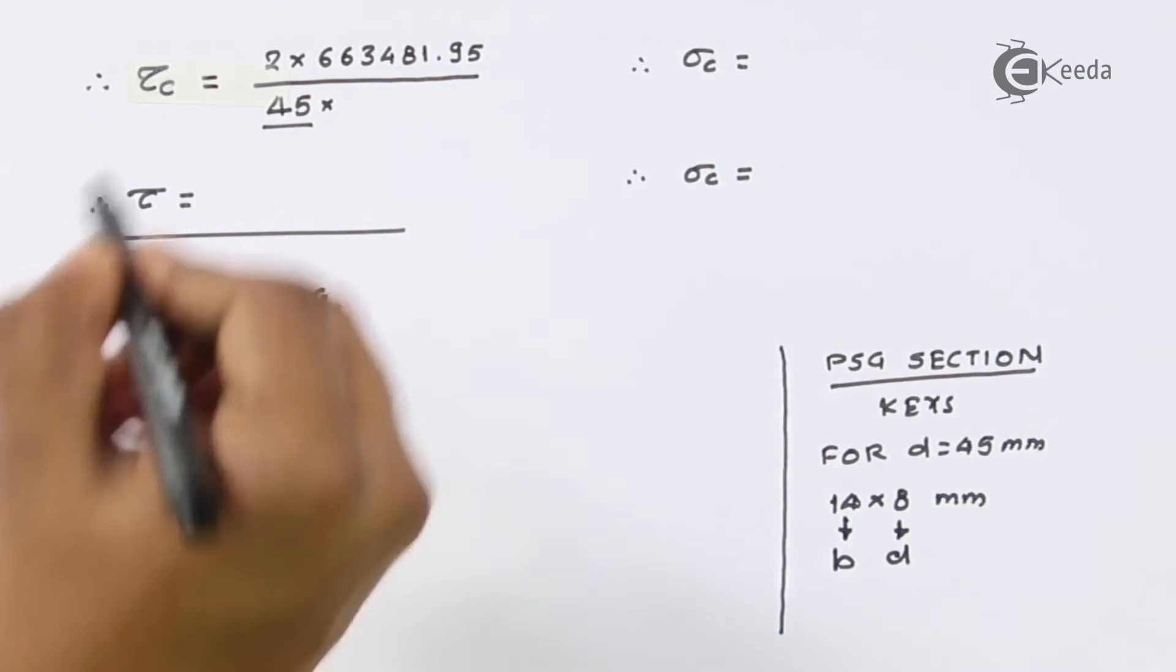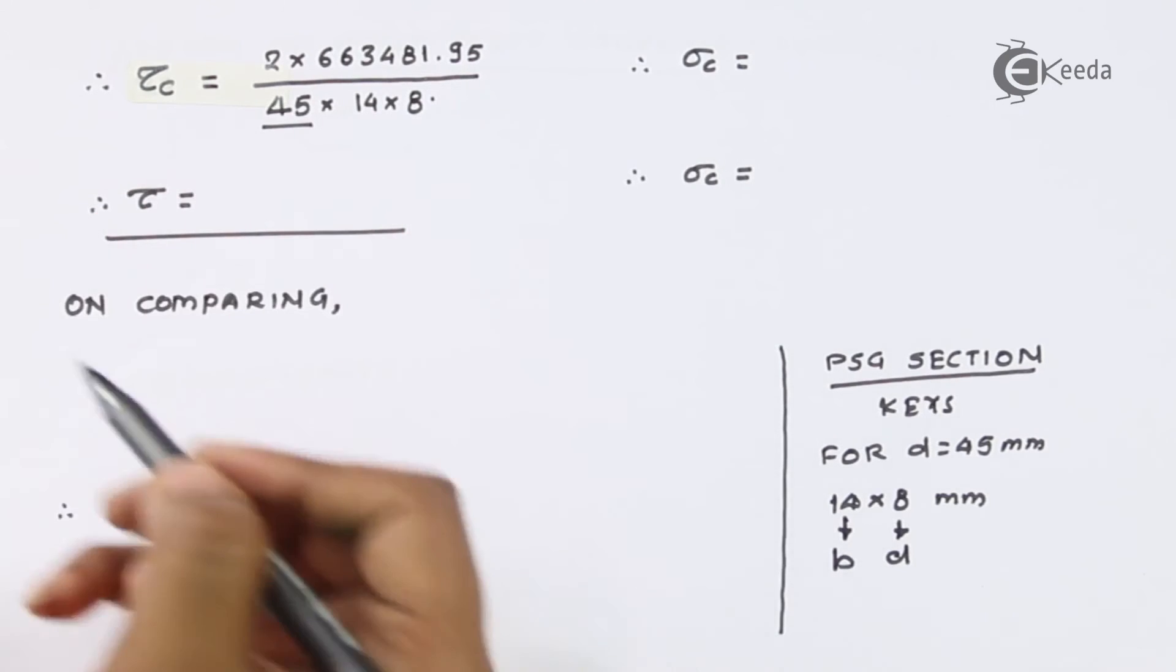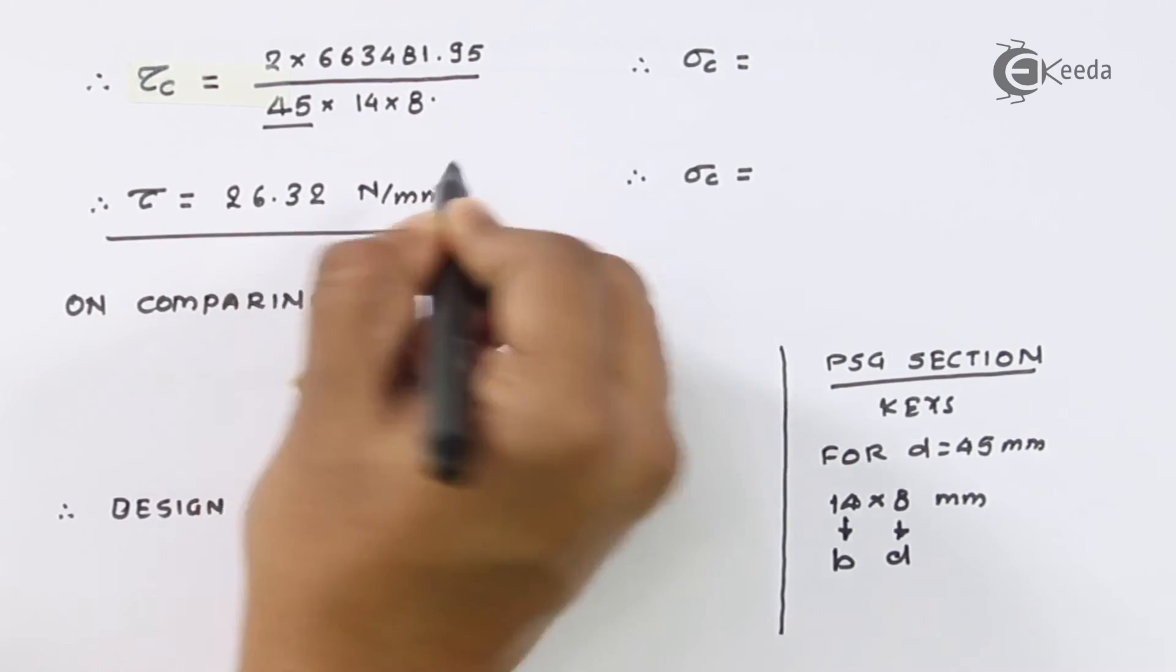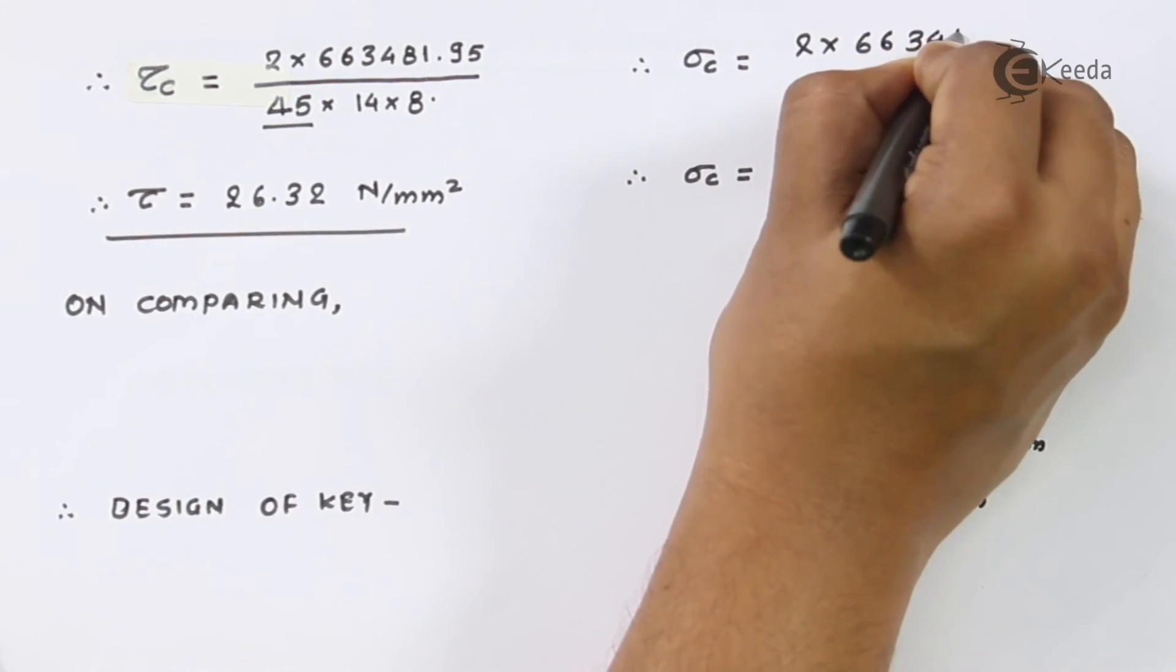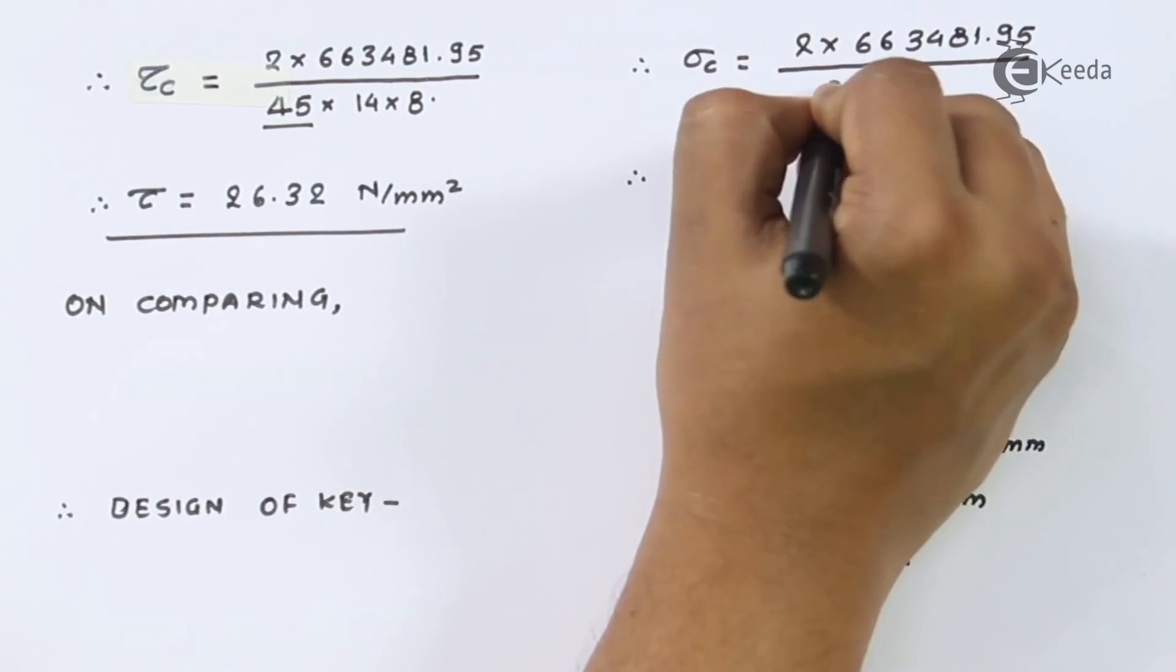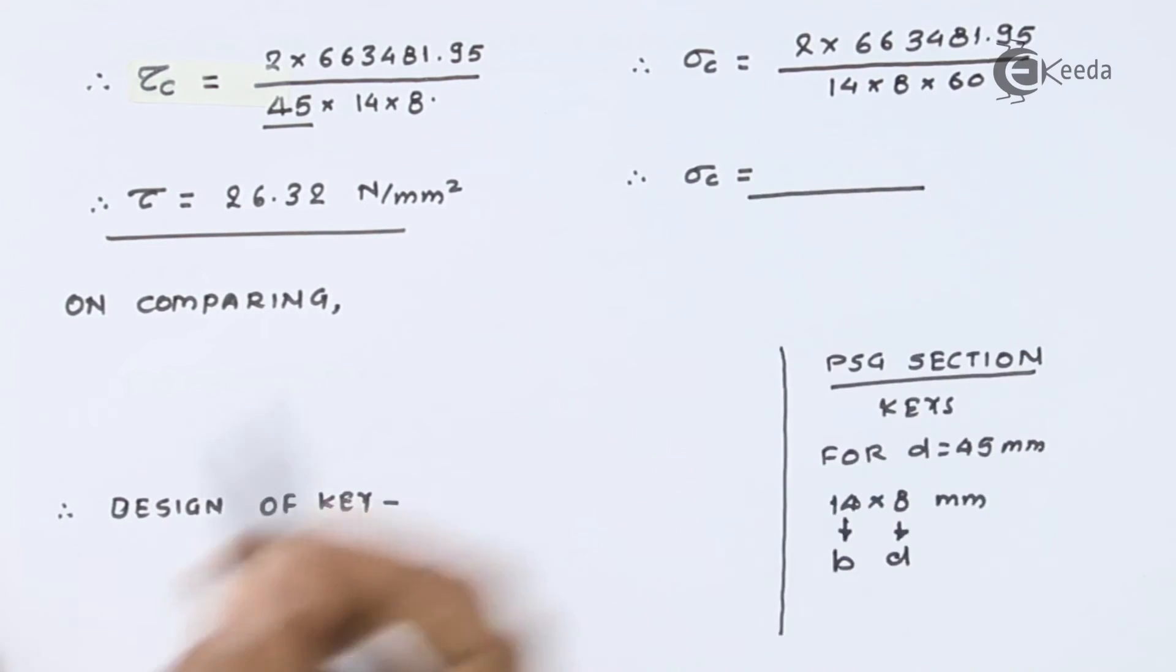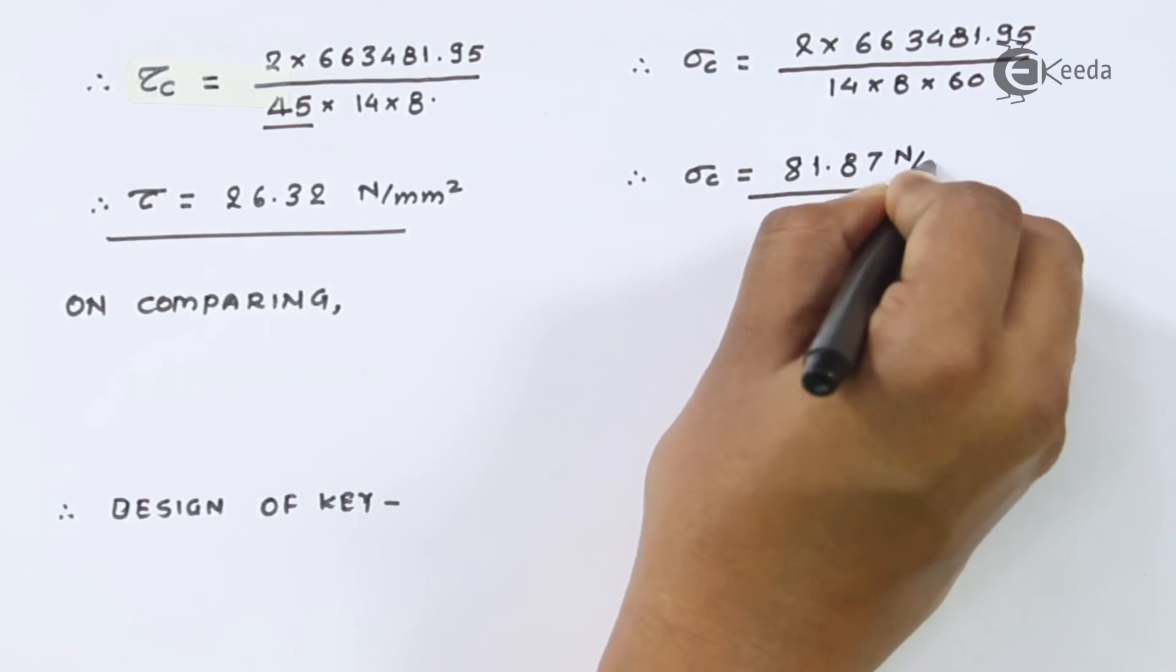Using these two values we can figure out the value of tau. Tau c comes out to be somewhere around 26.32 Newton per millimeter square. The same thing we can do about the compressive stress. It comes out to be 2 times Mt divided by d times h times length of the key. The value comes out to be somewhere around 81.87 Newton per millimeter square.